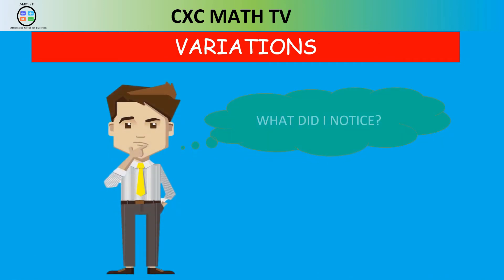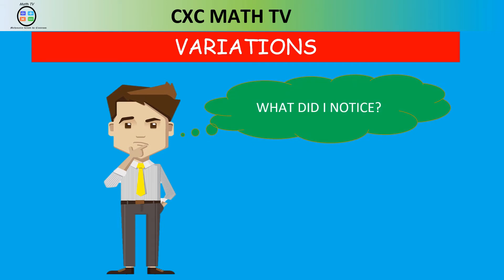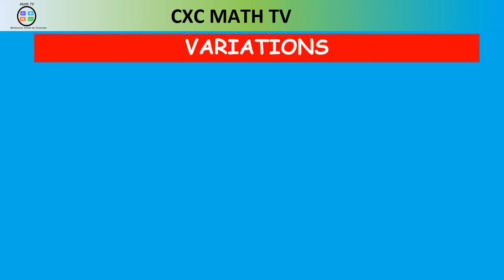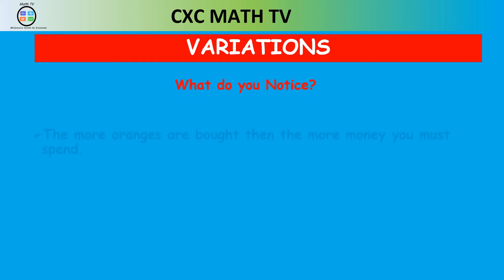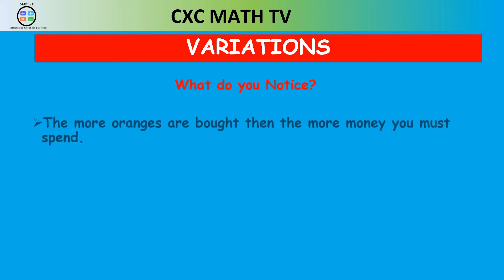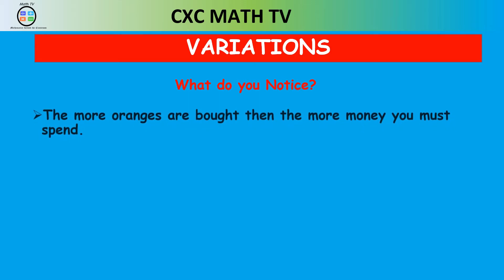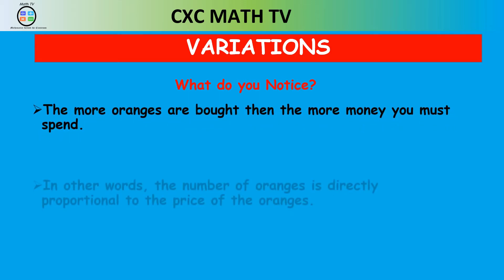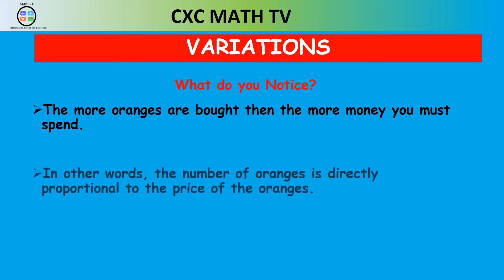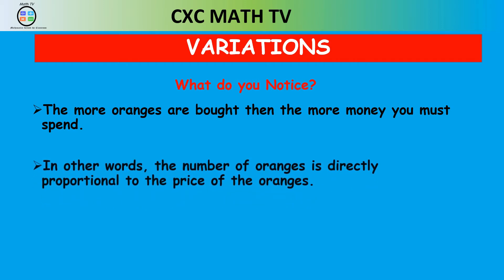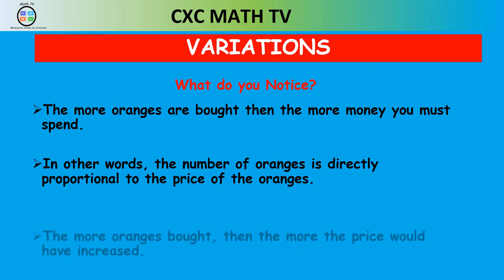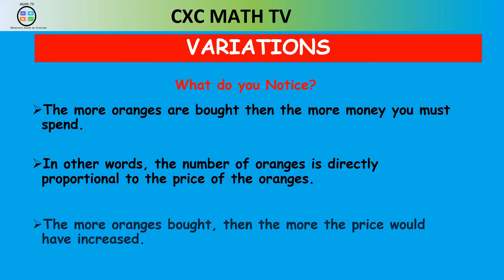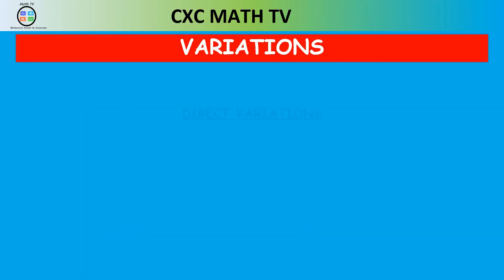So 26 oranges were bought for $33.80. Now my question is: what did you notice in doing this question? What you should have noticed is the more oranges are bought, the more money you must spend. In other words, the number of oranges is directly proportional to the price. The more oranges you buy, the more the price increases; the less oranges you buy, the less money you spend. This is known as direct variation.